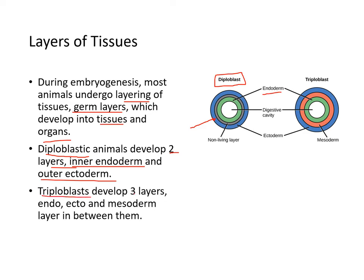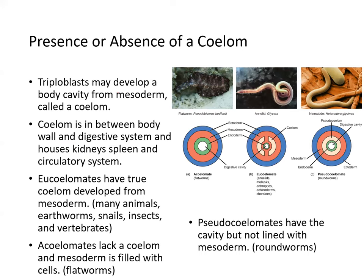Triploblasts develop three layers: endoderm, ectoderm, and mesoderm between them. The mesoderm, shown in orange, is in between the endoderm and ectoderm. Triploblasts may develop a body cavity from mesoderm called a coelom. The coelom is in between the body wall and the digestive cavity, and houses things like kidneys, spleens, and the circulatory system.